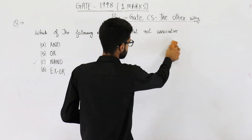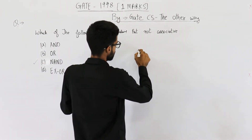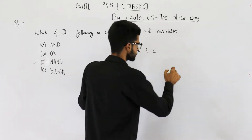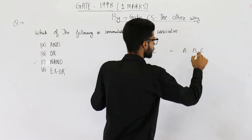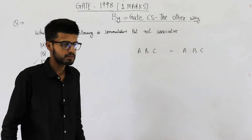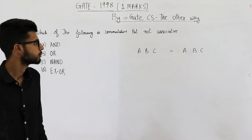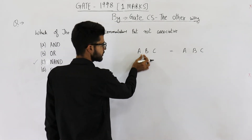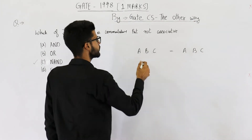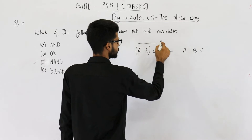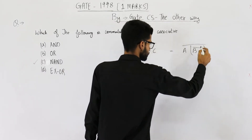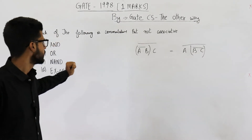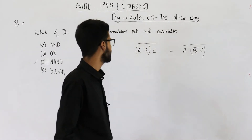For option C, NAND, let's have three inputs A, B, and C. Associativity says: if you have multiple inputs and we are taking NAND of all those inputs, does the order of solving these NAND gates matter? For example, if I NAND these two first versus NAND the other two first — will the result be the same? If both the LHS and RHS are the same, we say it is associative. If not, we say it is not associative.